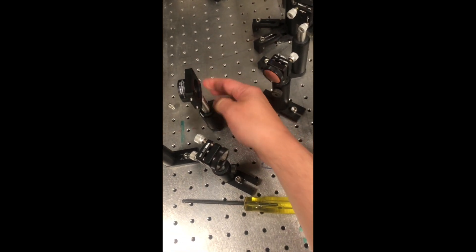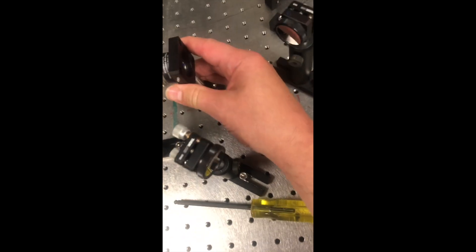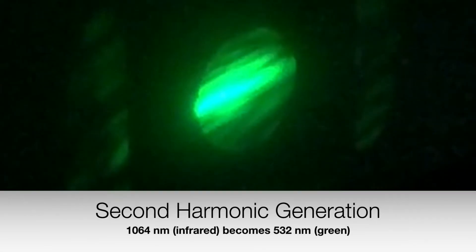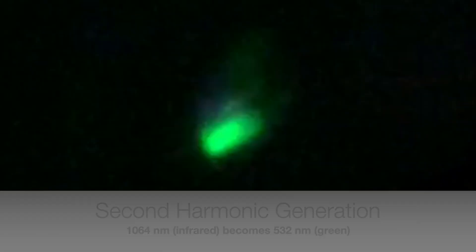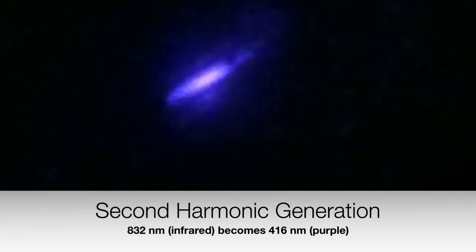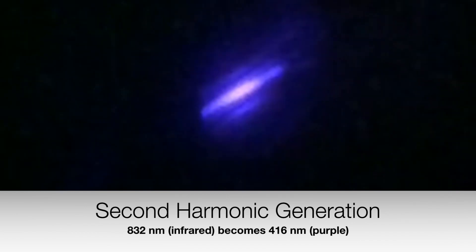Now, the first thing we're going to do is use each beam independently. So we will use the 1064 nanometer beam to generate a second harmonic beam at 532. This beam looks green. And then we'll use the 832 beam to generate second harmonic at 416. This beam looks purple.